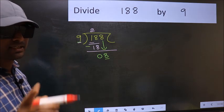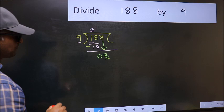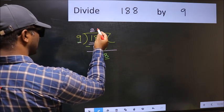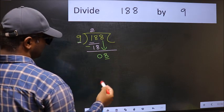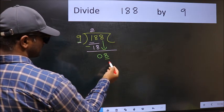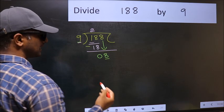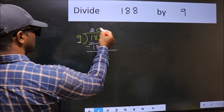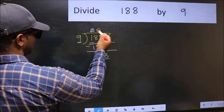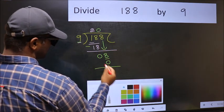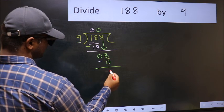Instead, what you should think is: which number should we take here? If I take 1, we get 9, but 9 is larger than 8. So we should take 0. 9 times 0 is 0. Now subtract: 8 minus 0 equals 8.